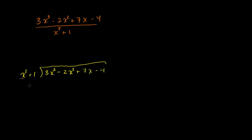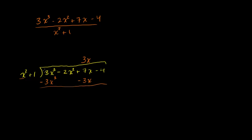Look at the highest degree term: x squared goes into 3x cubed 3x times. Write 3x in the x term place. 3x times x squared is 3x cubed, and 3x times 1 is 3x — put that in the x place. Subtract: the 3x cubed terms cancel. We have negative 2x squared. Then 7x minus 3x is plus 4x. And we have minus 4.